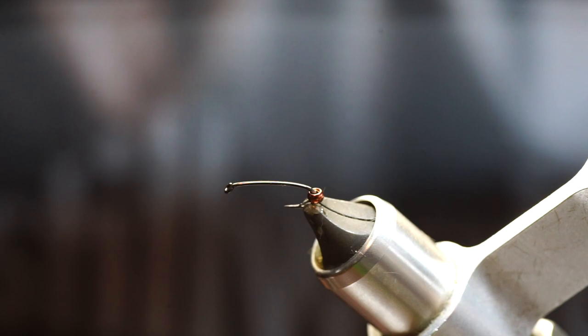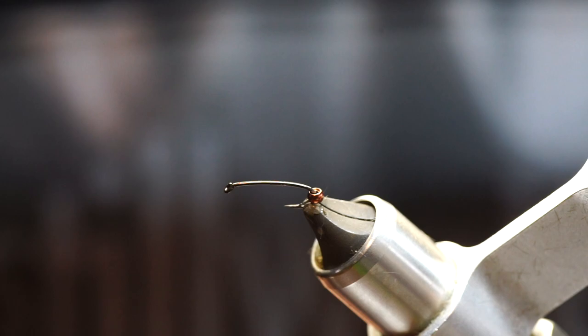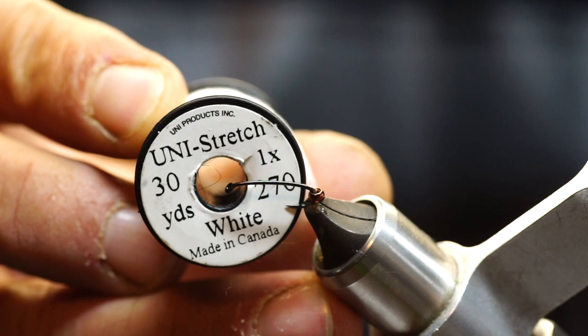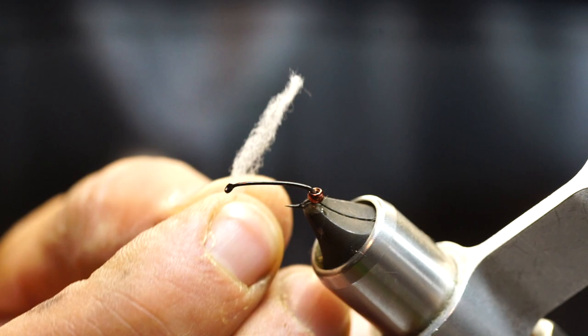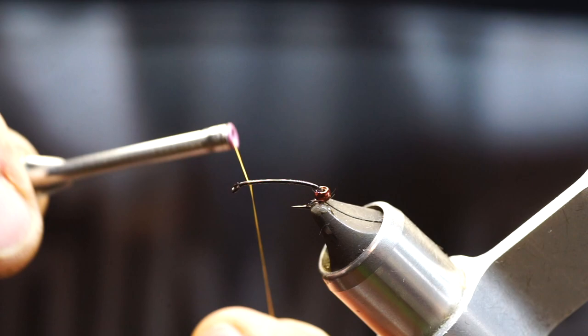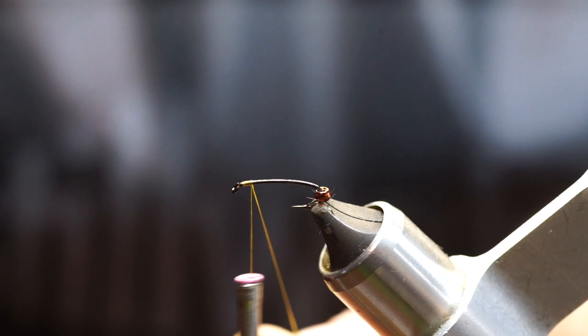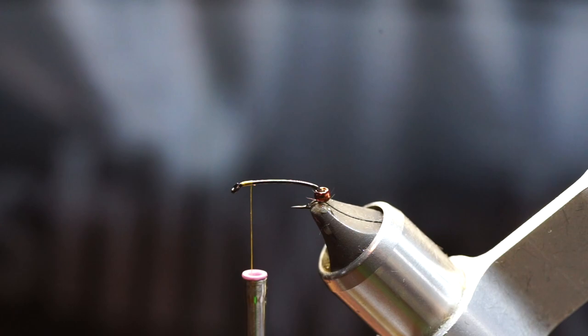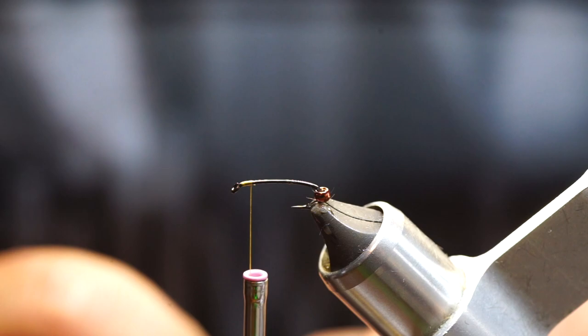I then slide the bead back and now tie in the gill material. The next material I'm going to be using for that is Uni Stretch. And I remove about a 1 inch piece. Alright, so to tie in the gill material, we'll start by laying down a few thread wraps. Color of your thread isn't important at this point, because it's going to be concealed by the bead once it's slid back over. So, just use whatever's in your bobbin.